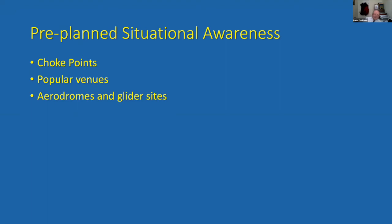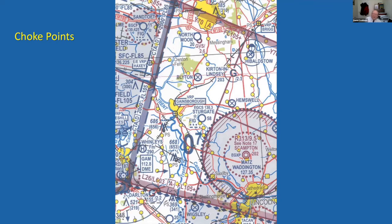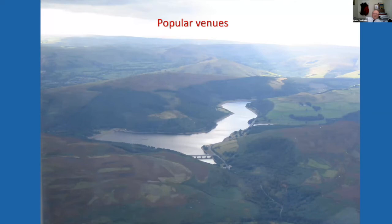We can help ourselves with situational awareness by pre-thinking where threats are likely to be. Flying across the country, there will be choke points — for example, Doncaster's controlled airspace on one side and the Red Arrows display area on the other creates a very narrow gap where anyone flying north or south must keep their eyes open. And if you're taking passengers sightseeing to somewhere like the Derwent Dam, be aware that if you think it's good to look at, a lot of other pilots will too — so watch out.